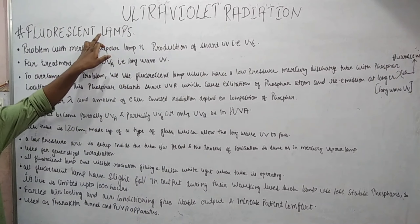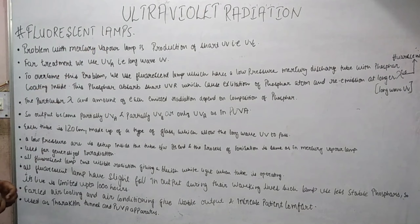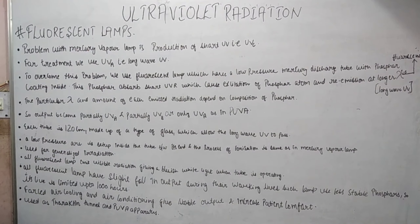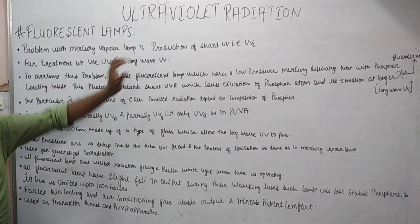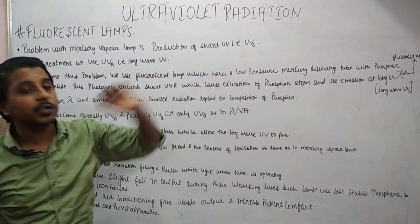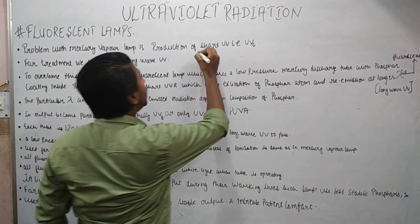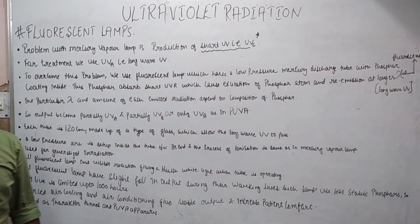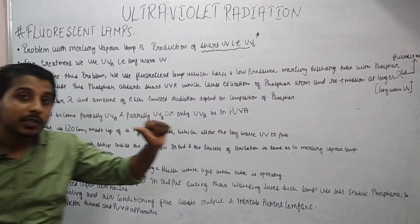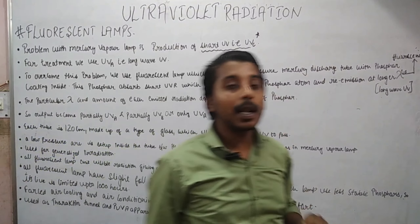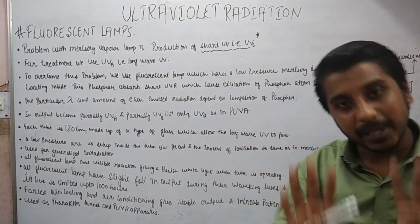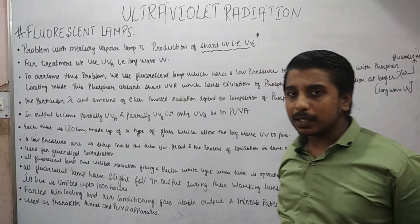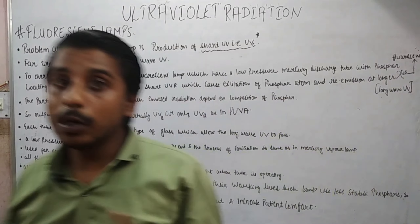Fluorescent lamps are relatively easier as compared to the mercury vapor lamp. The problem with mercury vapor lamp was the production of short UV, that is UVC. As I have explained in the spectrum of mercury vapor lamp, there was UV, infrared and visible, and there was UVA and UVB as the majority UV, but a small amount of short UV, that is UVC, which is not good for us.